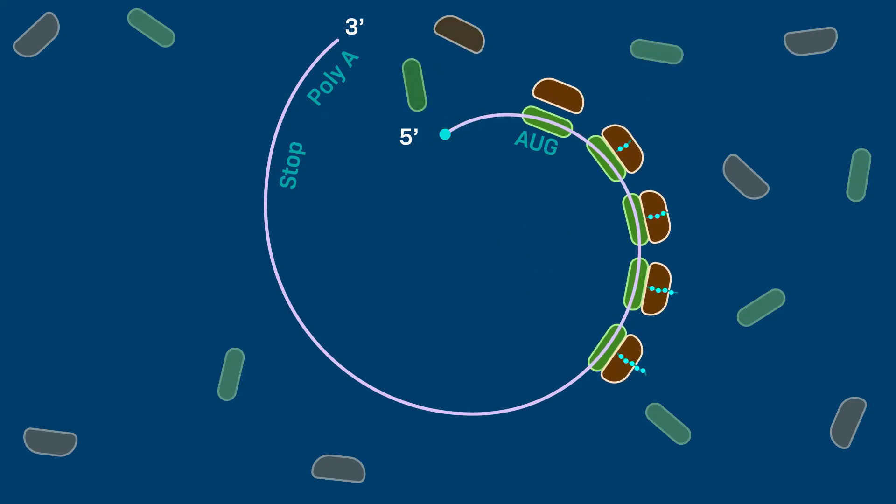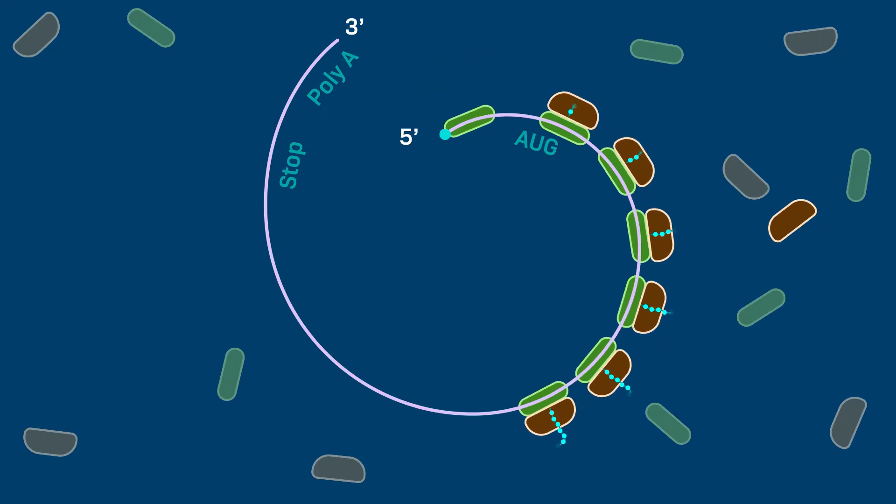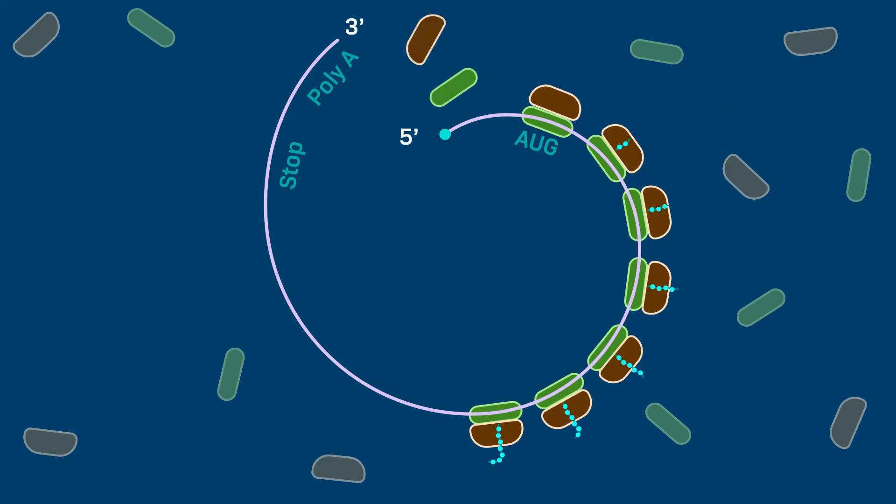Typically, many ribosomes translate the mRNA simultaneously. Each ribosome begins at the 5' end of the mRNA and progresses steadily towards the 3' end.